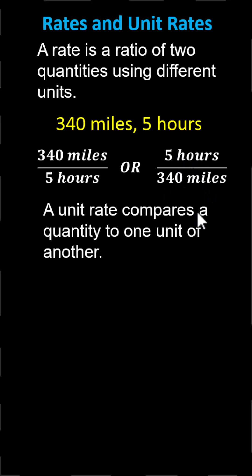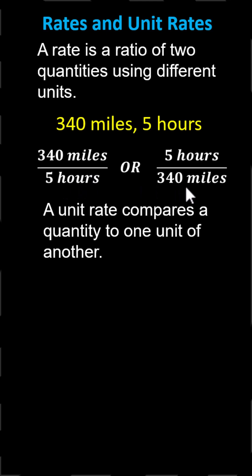A unit rate compares a quantity to one unit of another. So to form the unit rates of these two rates, we would want 5 hours to be 1 hour, and 340 miles to be 1 mile.